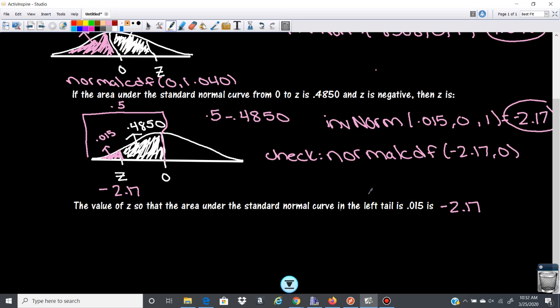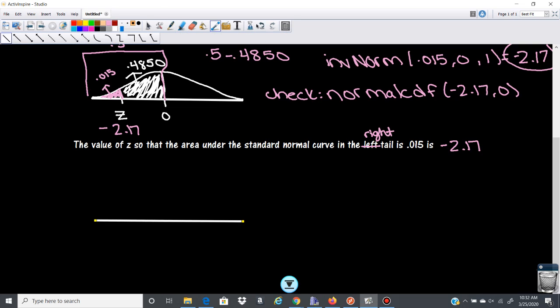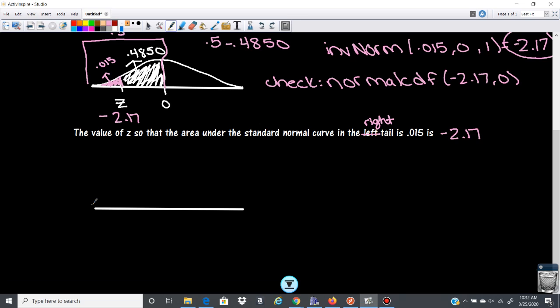Let's say maybe negative 2.17. Let's say it's the other way around. We'll go in the right tail. Okay, let's look at the problem from that perspective. So if I draw this out, here's my normal curve. And the area in the right tail is 0.015. So I need to find the z-score.